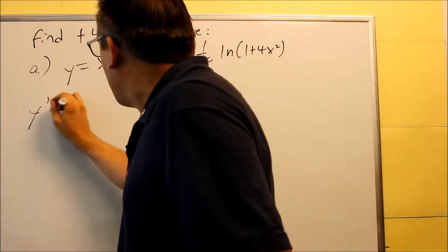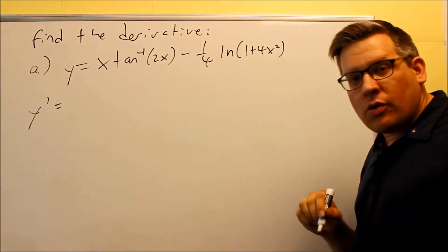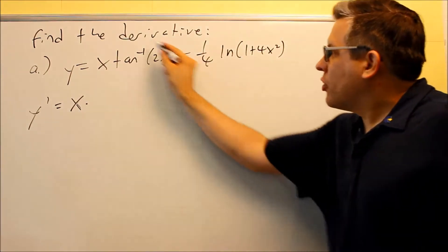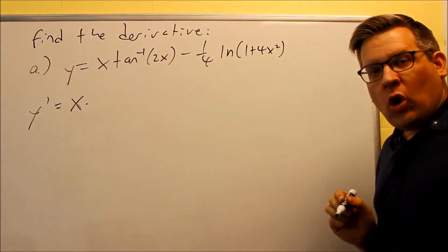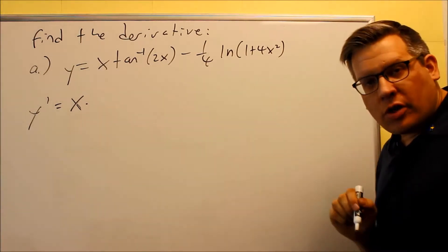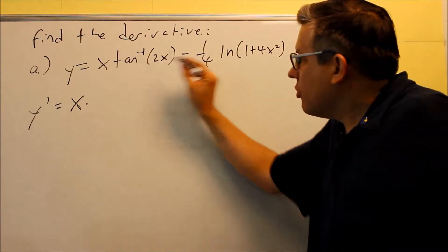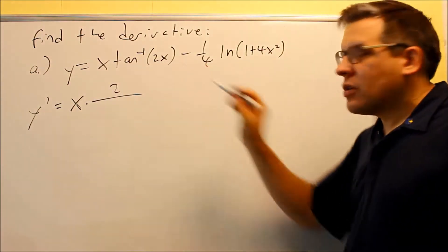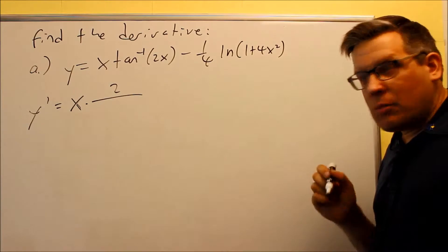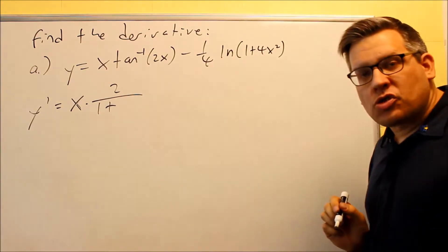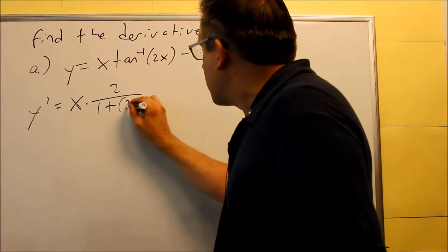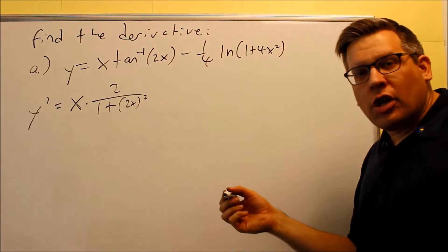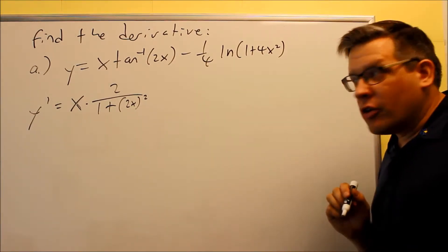So let's do this one. We've got to use the product rule. We have the first thing, times the derivative of the second. For the derivative of the second, we're going to use u prime over 1 plus u squared. The u is 2x, so on top we have the derivative of the inside, which is 2. On the bottom, we have 1 plus u squared, so 1 plus (2x) quantity squared. That formula comes from the inverse tangent formula we talked about in an earlier video.